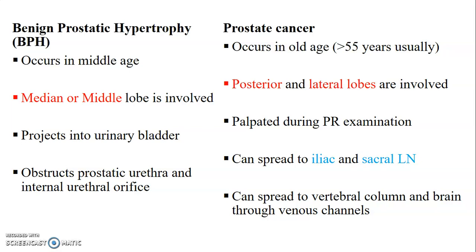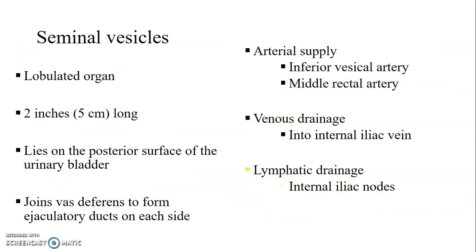We have BPH and prostate cancer. BPH is benign prostatic hypertrophy — enlargement of the prostate that occurs in middle-aged men at around 40 years, mainly involving the median lobe. It is located between the urethra and the ejaculatory duct and usually projects into the urinary bladder, obstructing the prostatic urethra. Prostate cancer occurs in old age and usually the posterior and lateral lobes are involved. On digital rectal exam the prostate can be palpated, and the cancer can spread to iliac nodes, sacral nodes, and also to the vertebral column and brain through the vertebral venous channels.